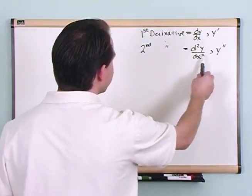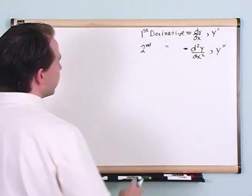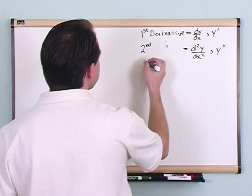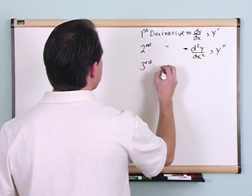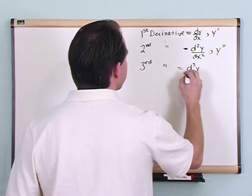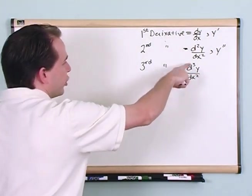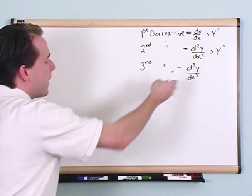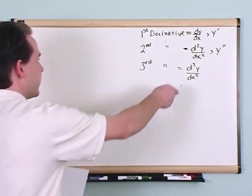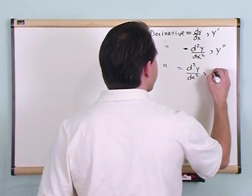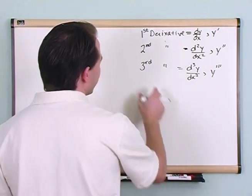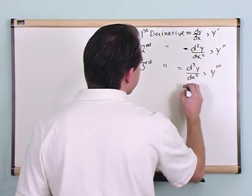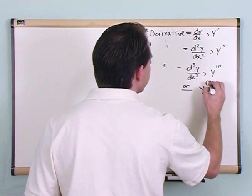Don't ask me why they decided to put the two here — that's lost in the history of calculus — but this is how you write the second derivative. You can also write it with your variable with two prime marks. The third derivative can be written as d³y over dx³, and these aren't cubes or squares — this doesn't mean dx to the third power — it's just a reminder that this is a third derivative, not an exponential. And you can write that as y with three little marks.